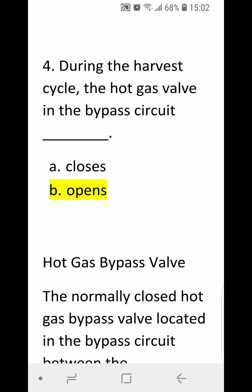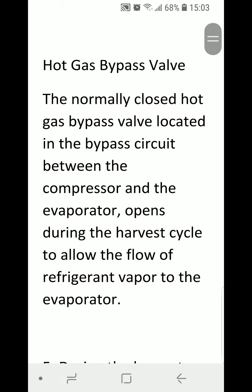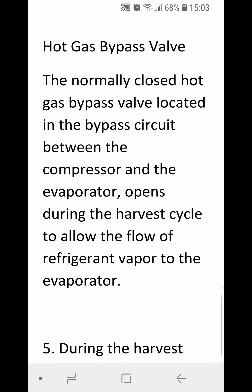Number four: during the harvest cycle, the hot gas valve in the bypass circuit — A) closes or B) opens. The normally closed hot gas bypass valve, located in the bypass circuit between the compressor and the evaporator, opens during the harvest cycle to allow the flow of refrigerant vapor to the evaporator.